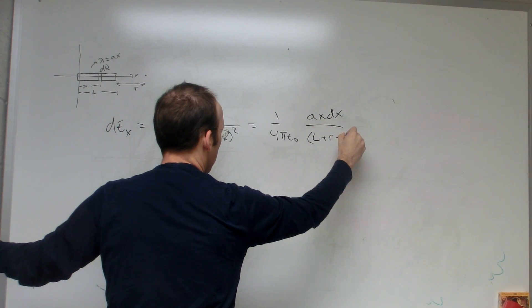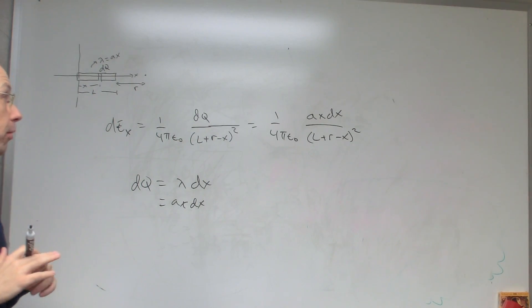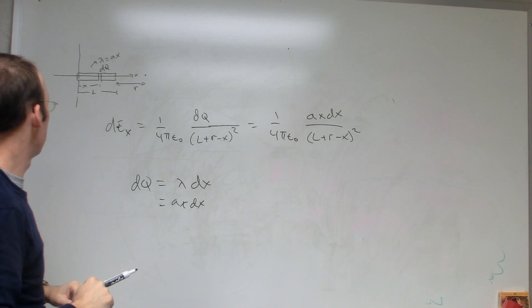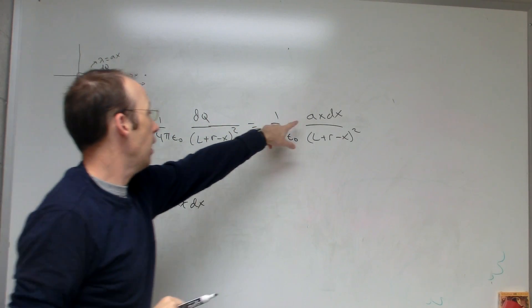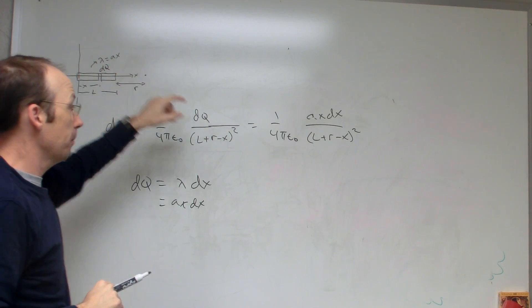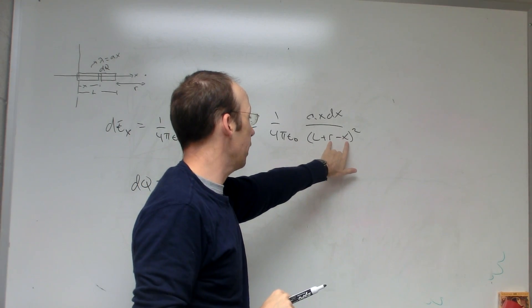Now let me just point out something here that's important. I have some variables and I have some constants, but there are different kinds of variables in this problem. You know, L is the length of that rod, okay, that's no big deal. And a is the constant that goes along with the density function. But the two that we're looking at are r and x.